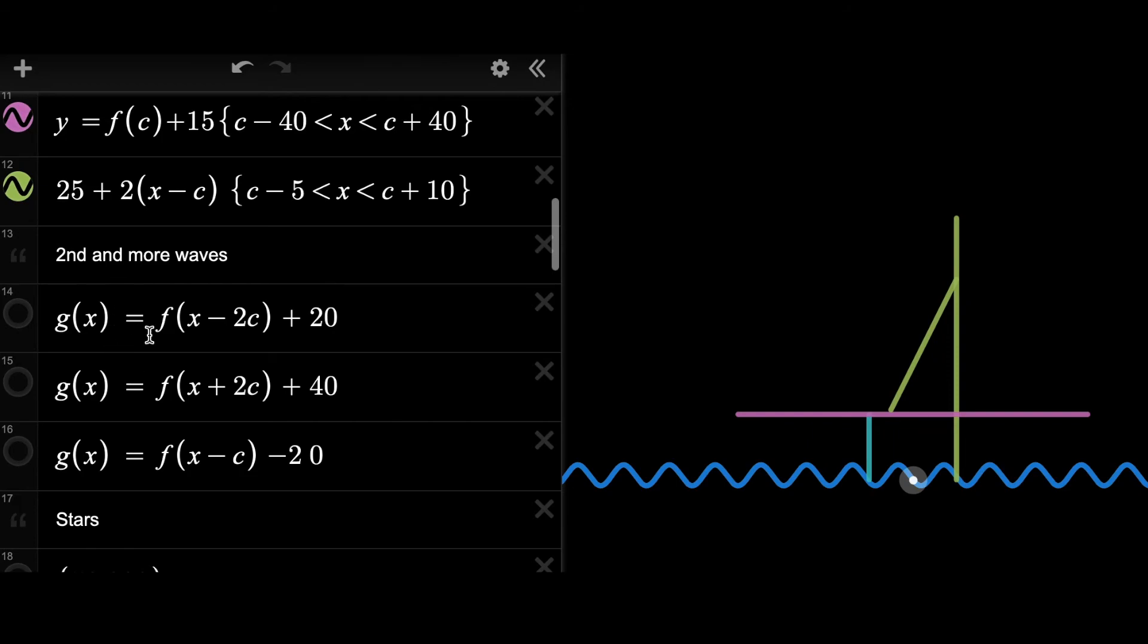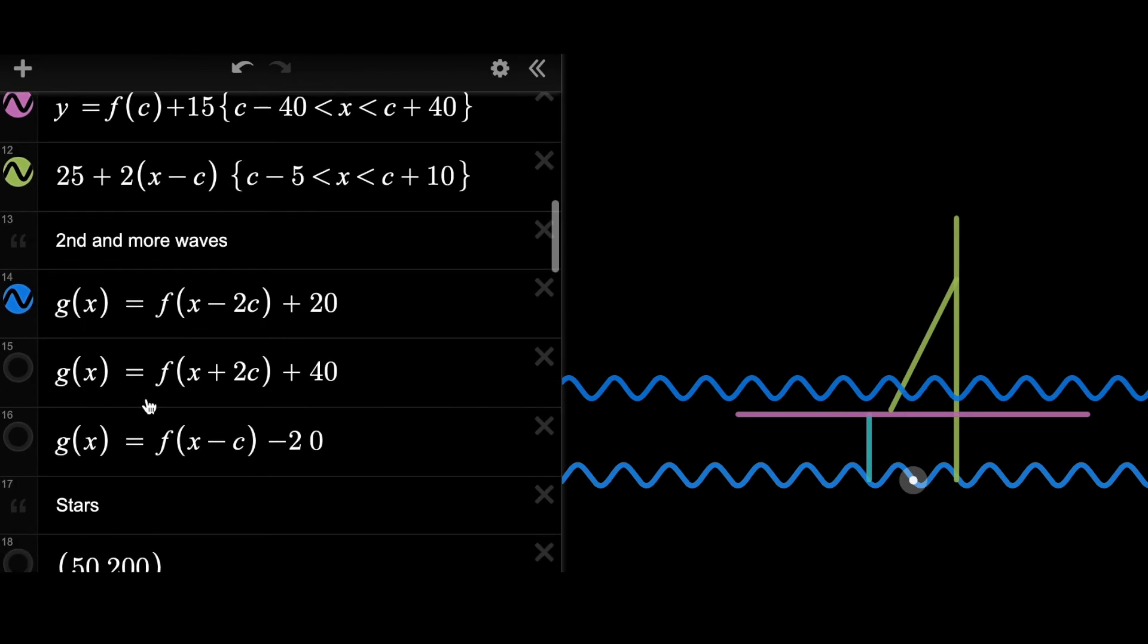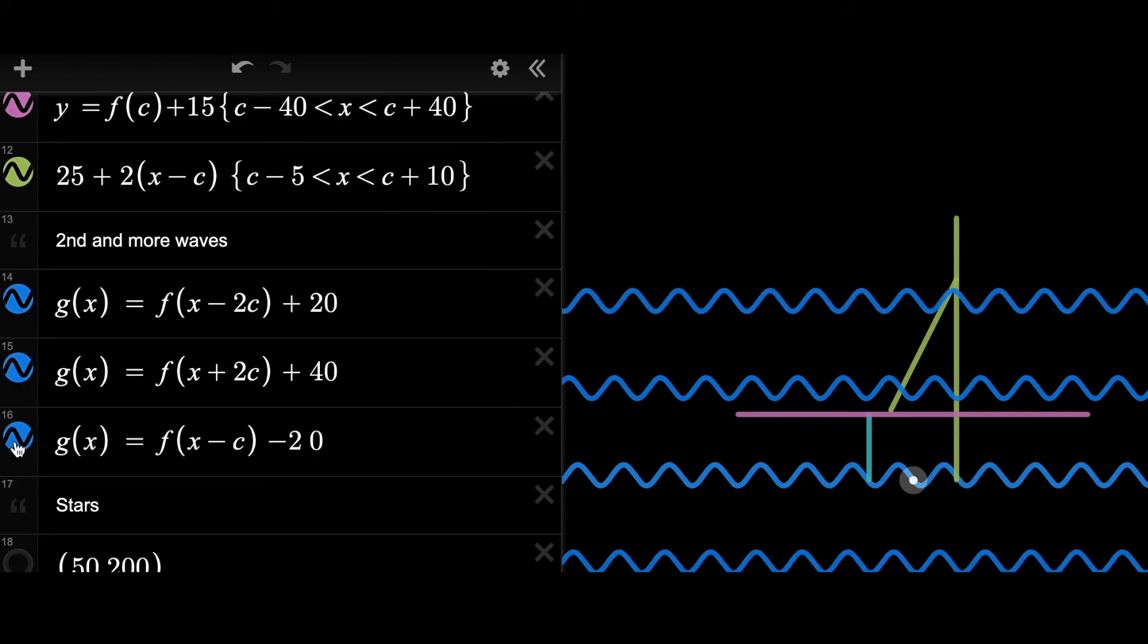We should create more waves to make the landscape more realistic. Again, I applied linear transformations into the function of the first wave to create another wave above it. And I create total two more waves above the original one and one wave below the original one.